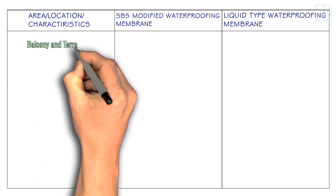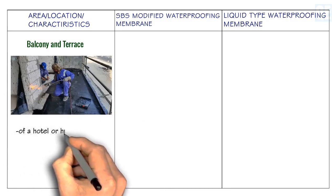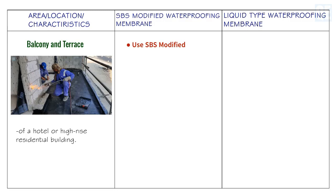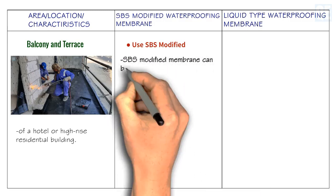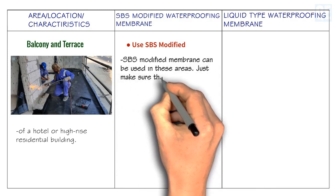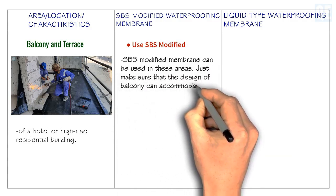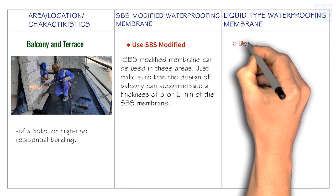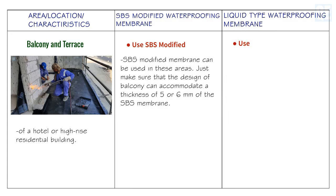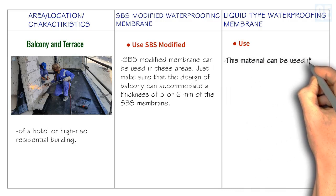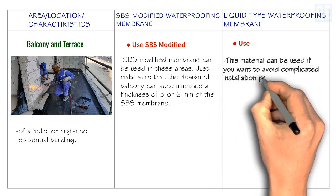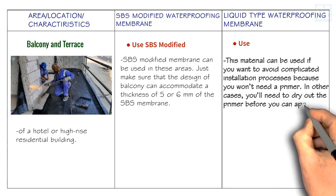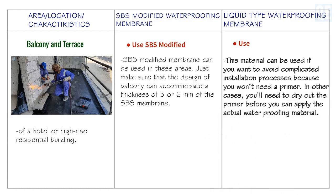For balconies and terraces of a hotel or high-rise residential building, you can use SBS modified waterproofing membrane — just make sure the balcony design can accommodate a thickness of 5 or 6 mm. You can also use liquid type waterproofing membrane if you want to avoid a complicated installation process, since you won't need a primer — in other cases you'd need to dry out the primer before applying the actual waterproofing material.